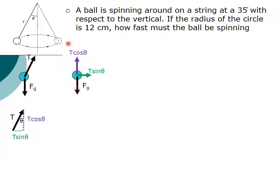T cosine θ should equal force of gravity. These should cancel out, and hopefully I have a net force horizontally towards the center if it's going to go in a circle. So T sine θ is my net force.